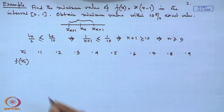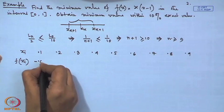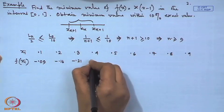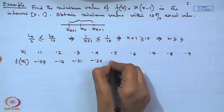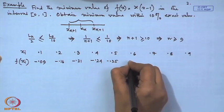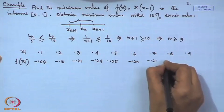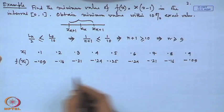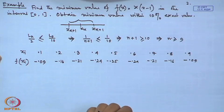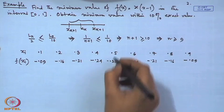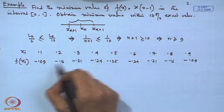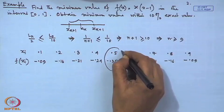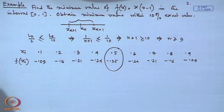The functional values at the points are: −0.09, −0.16, −0.21, −0.24, −0.25, −0.24, −0.21, and so on. The function is symmetric in nature. The minimum occurs at x = 0.5 with a functional value of −0.25. We declare the minimum value as −0.25 and the interval of uncertainty as [0.4, 0.6], which is within 10 percent of the exact value.